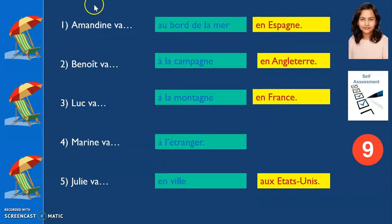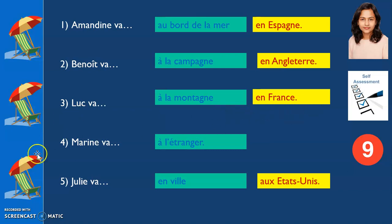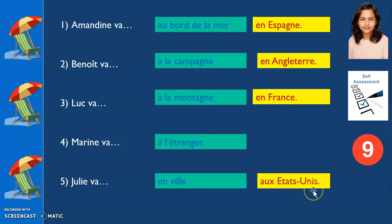Now let's self-assess. Here are the answers: Amandine va au bord de la mer en Espagne. Benoît va à la campagne en Angleterre. Luc va à la montagne en France. Marine va à l'étranger. Julie va en ville aux États-Unis. Mark yourself out of nine.